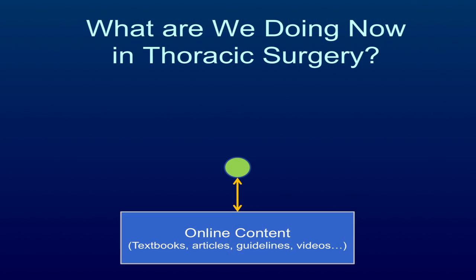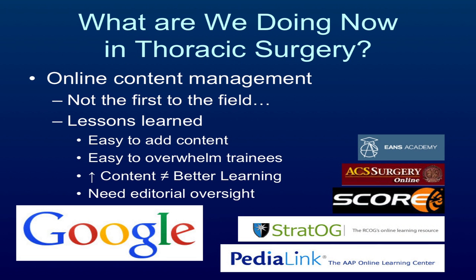What are we doing right now in thoracic surgery? Starting with the learner — our trainees — the first thing we decided to hit was the low-hanging fruit: get core content online and available to trainees ubiquitously across the country so they have access to the same material regardless of location. We're not the first to do this. EANS, the European Association of Neurosurgery, has an entire core curriculum online. ACS Surgery is an electronically updated wiki-type textbook. SCORE is the general surgery online curriculum. STATOG is through the Royal College of OB/GYN in the UK, and PediLink is through the American Academy of Pediatrics.